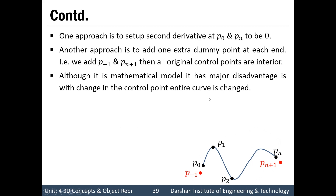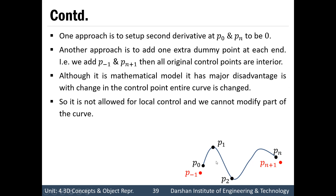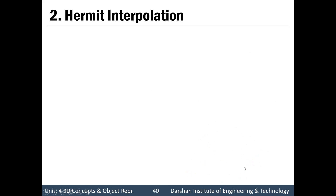Although it is a good mathematical model, natural cubic spline has a major disadvantage: it cannot allow local control. This means we cannot modify only a certain part of the curve — if a single control point is changed, it will affect the position of the entire curve. So local control is not possible with natural cubic spline.